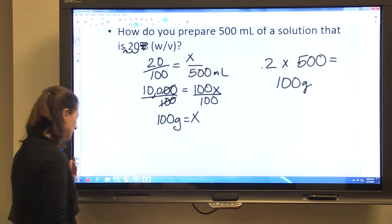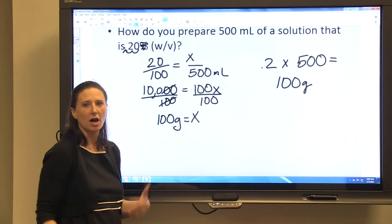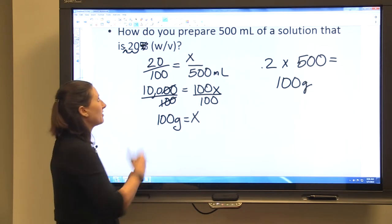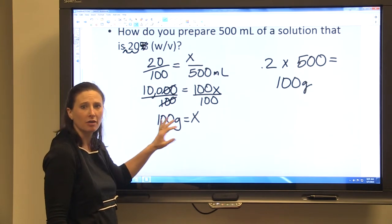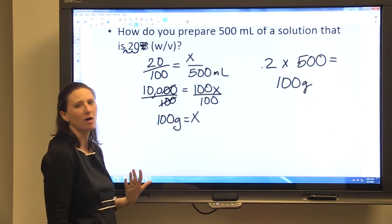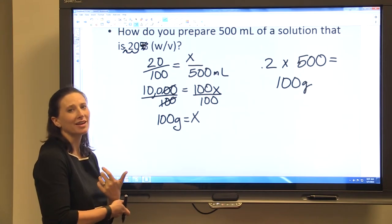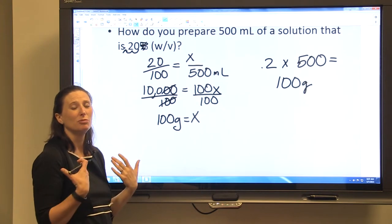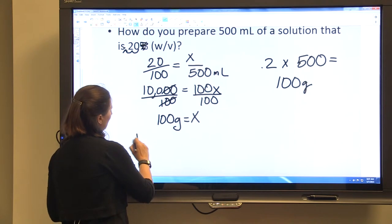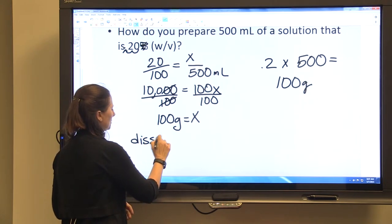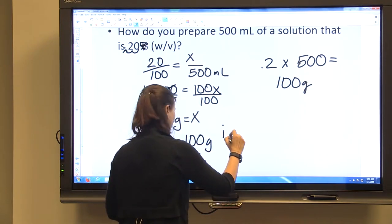Where it's a little bit different is that you can't just dissolve 100 grams into 500 mLs and call it a day. Because that mass of whatever you're adding to your solution has some volume. And so if you add that to 500 mLs, you're going to end up with a solution that is actually greater than 500 mLs.